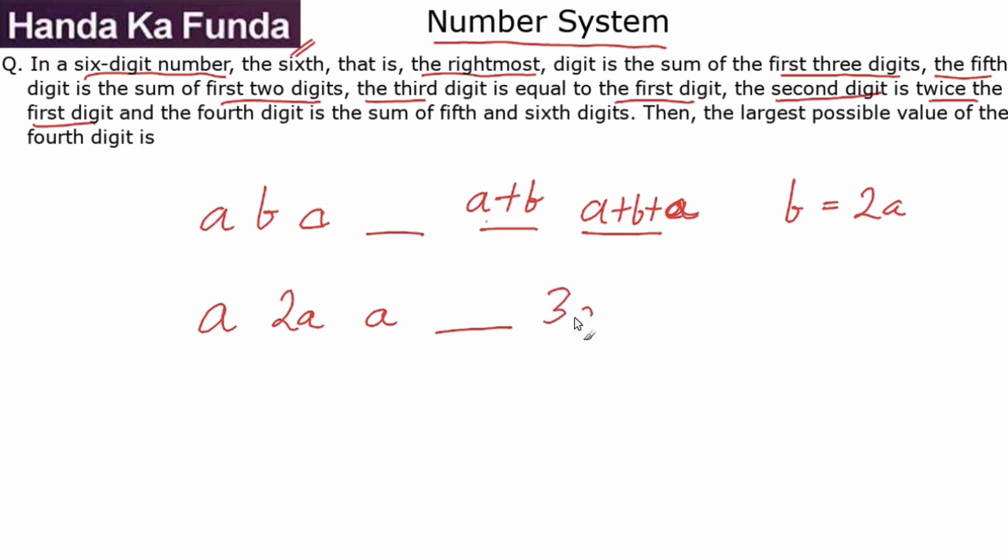Fifth digit is A plus B or A plus 2A, which is 3A. And the sixth digit is A plus 2A plus A, or this is 4A. And then we have the fourth digit is the sum of the fifth and the sixth digit.